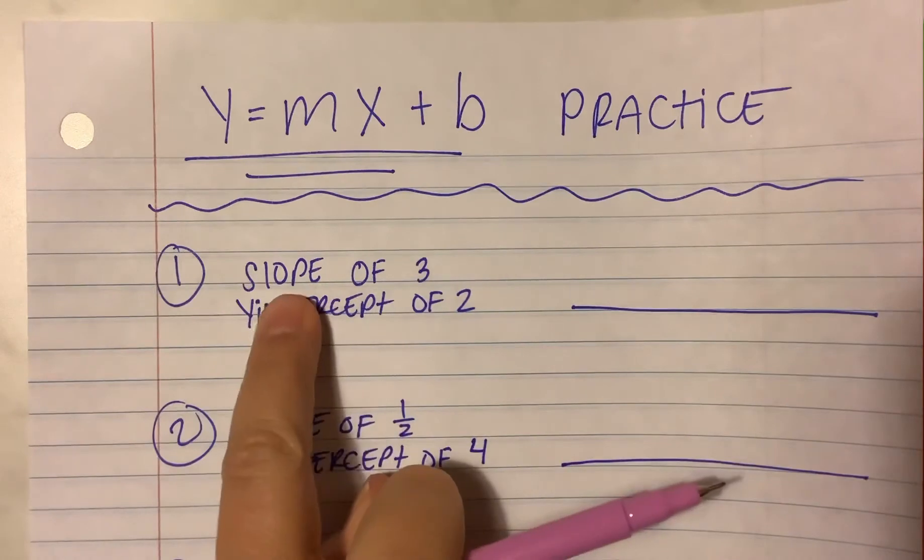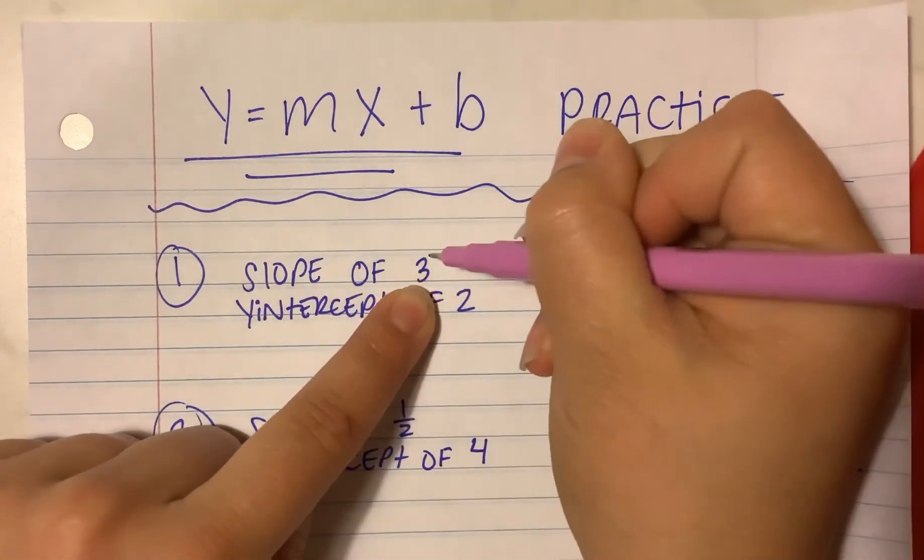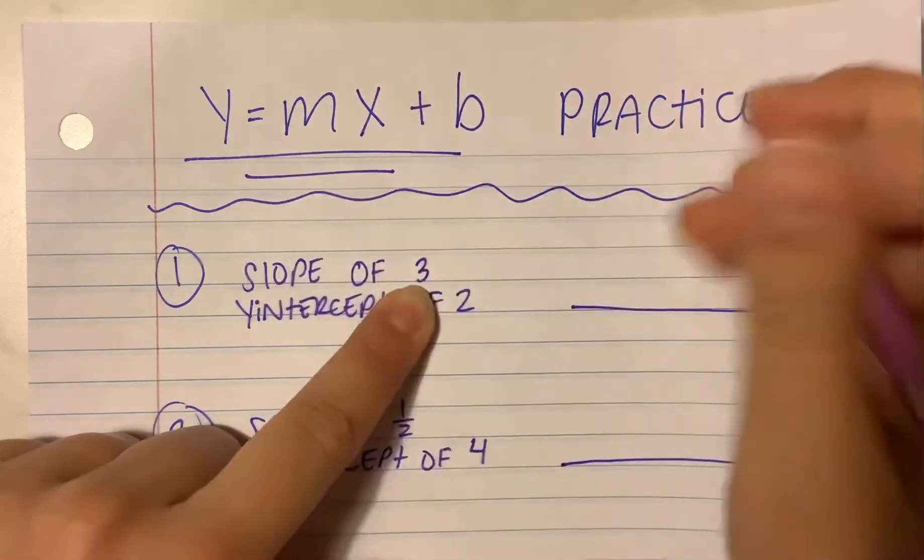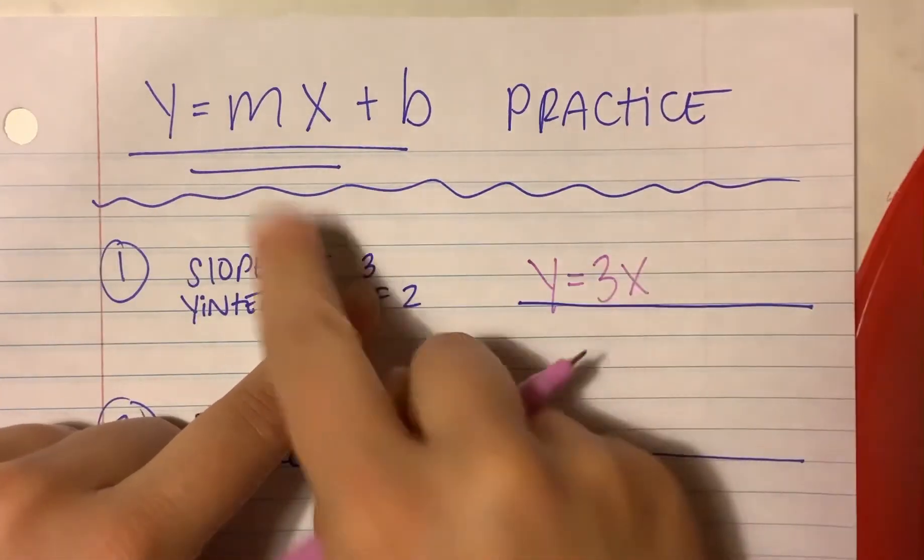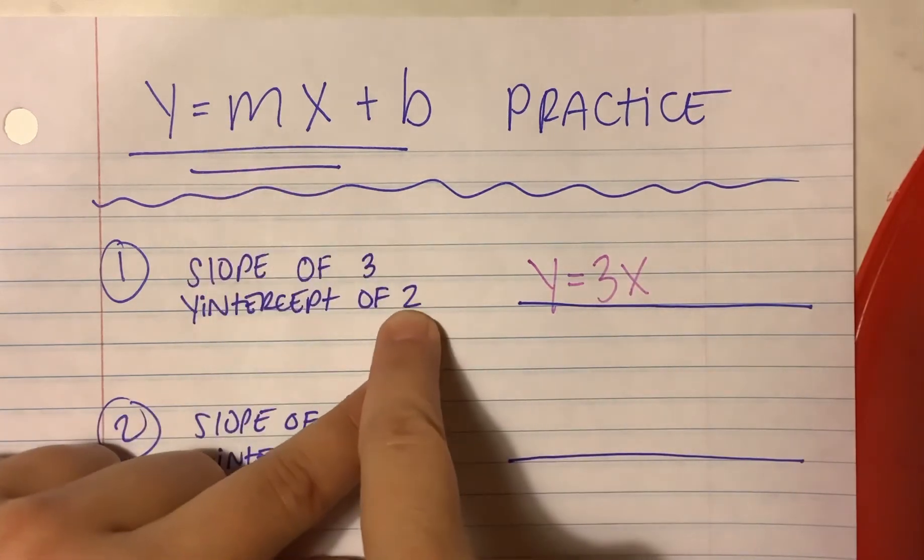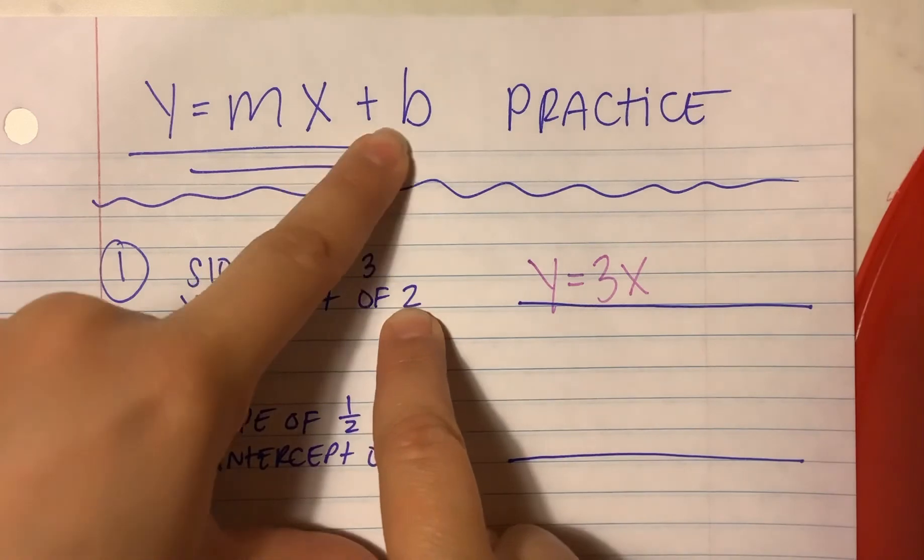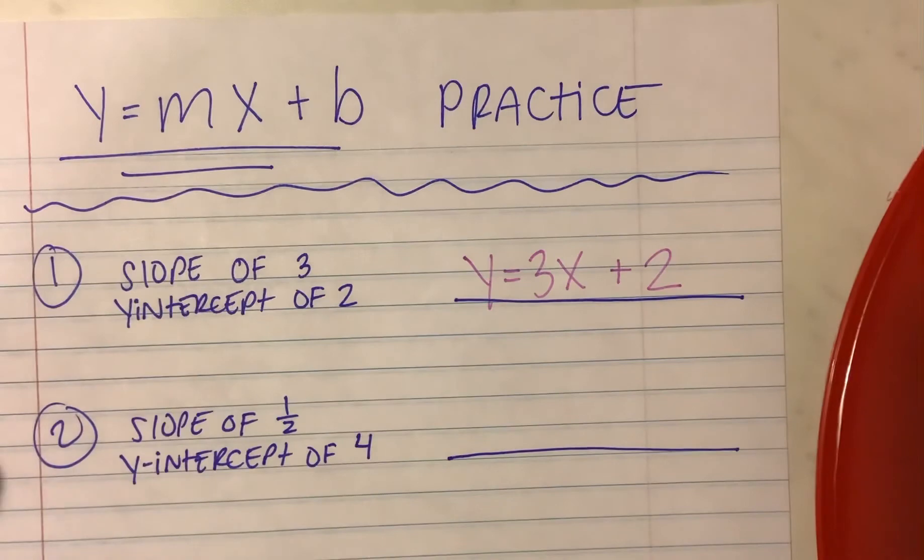For instance, for this one, it says slope of 3, y-intercept of 2. If this number goes where the m goes, I'm going to write y equals 3x because we replaced the 3 with the m. And then the y-intercept of 2, I replaced this b right here with a 2, just like that, plus 2.